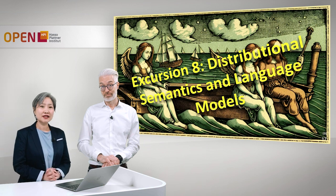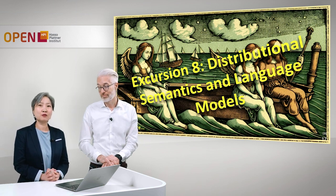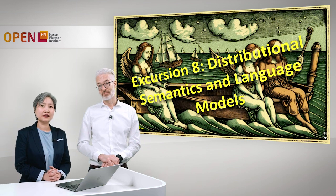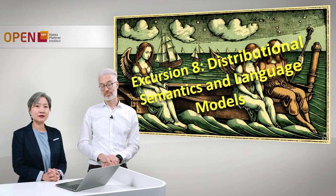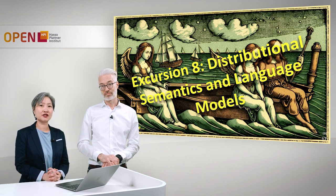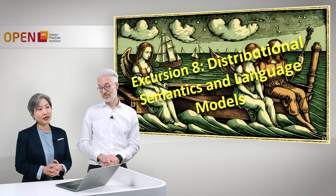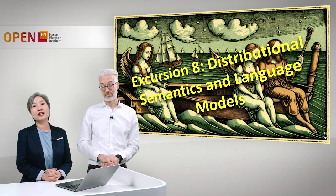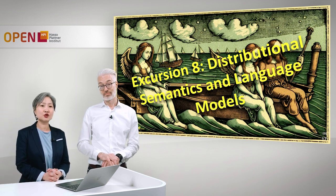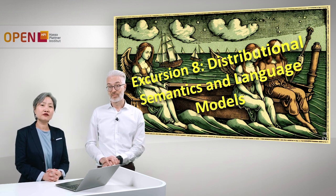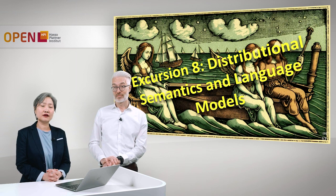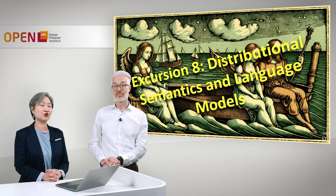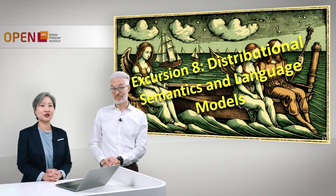As we have seen, we can find the importance of a node using network analysis techniques, but this is computationally very complex. We can also use embeddings to approximate these things. Because knowledge graph embeddings were influenced by developments in NLP, the next section will be about distributional semantics and language models.